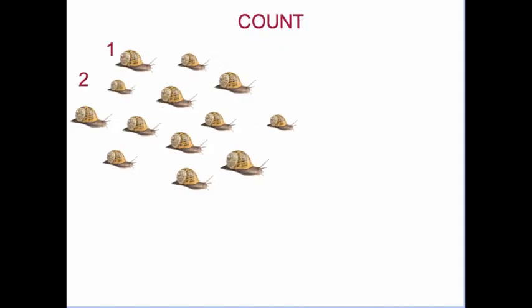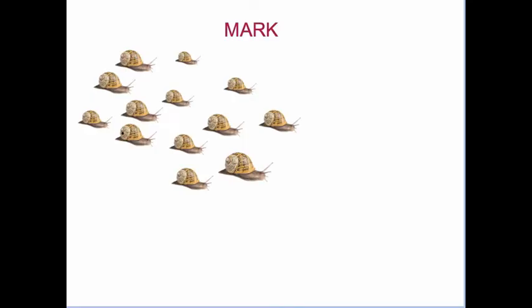Let's count them and we find that we have 13 brown garden snails. Let's put a mark on each of our 13 garden snails and let's choose a mark that is not going to make it vulnerable to predators.